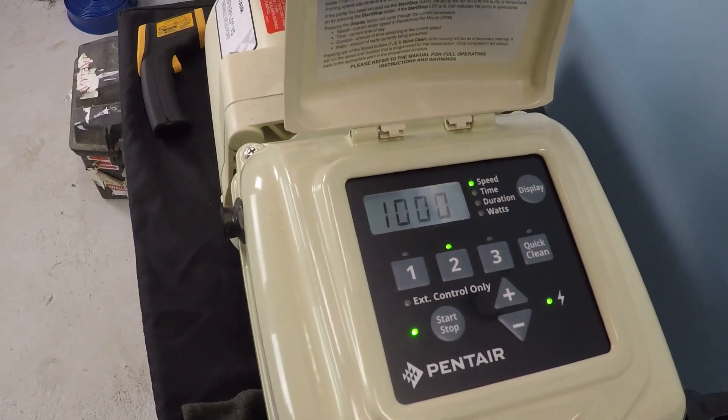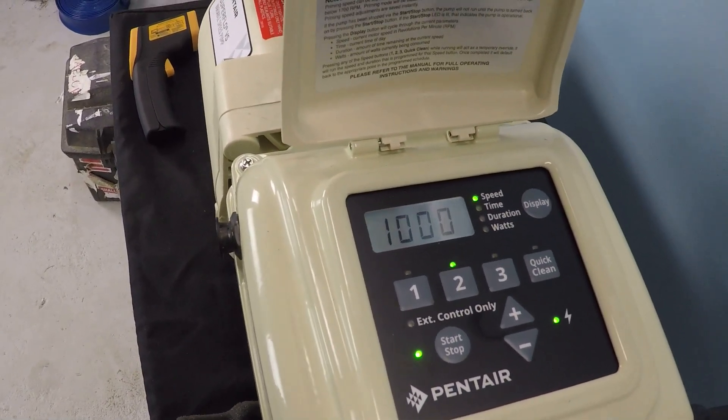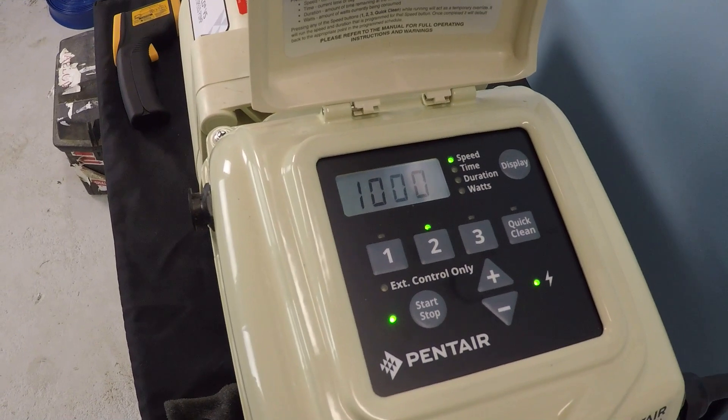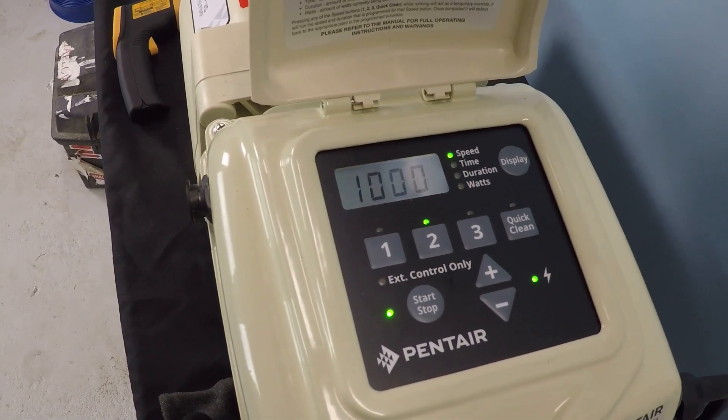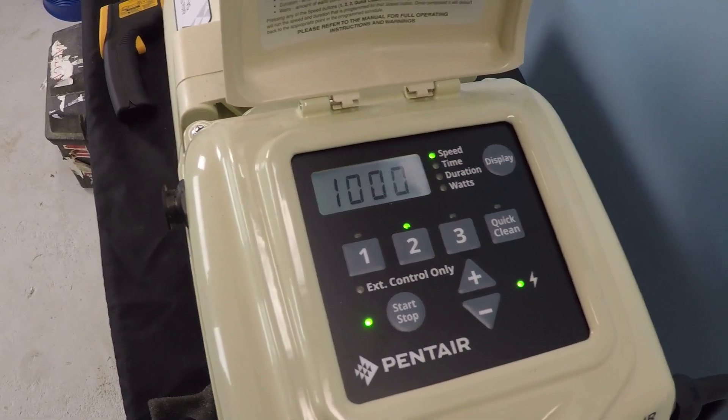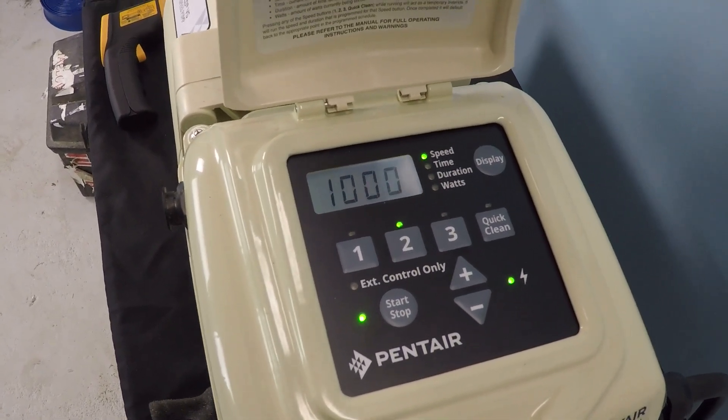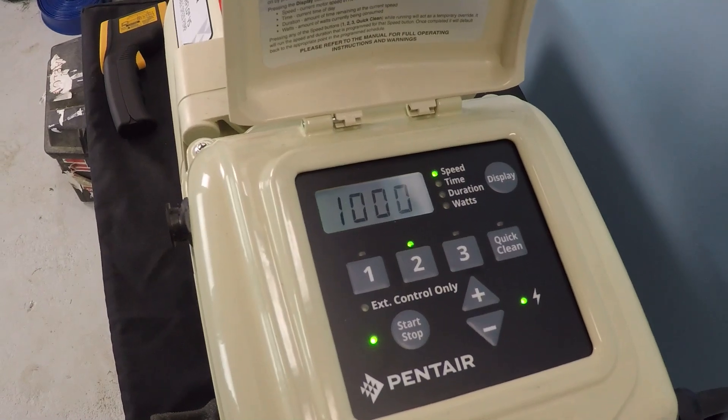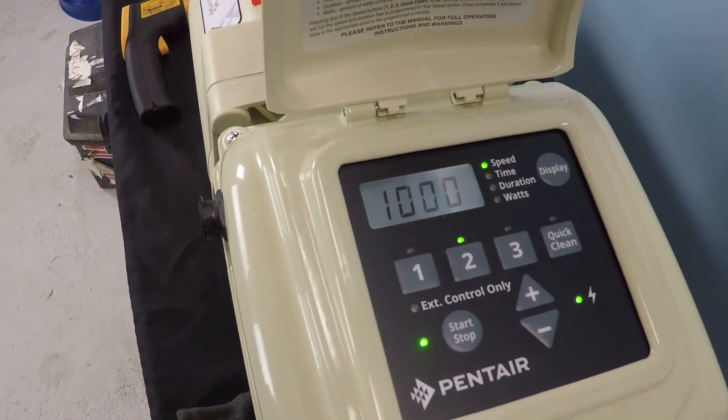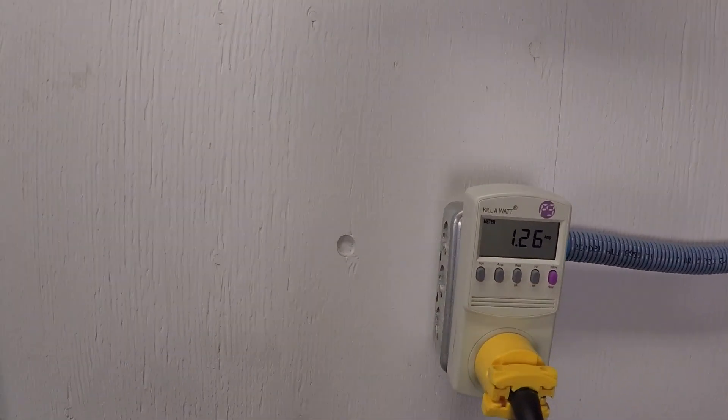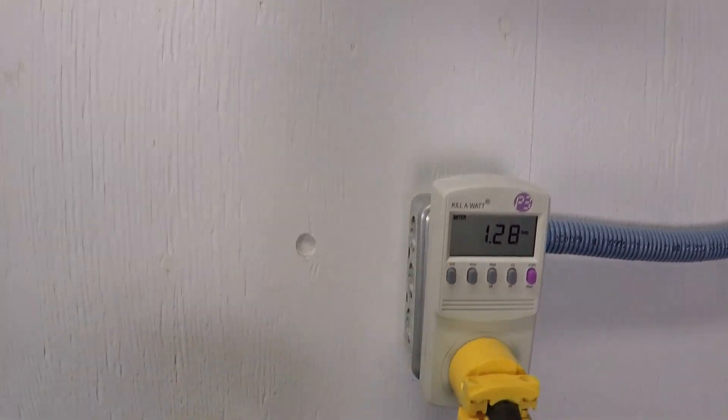Two suction lines and one return line is a really common swimming pool configuration, though possibly more so for older swimming pools, older generation pools. Still, that's something you're going to see quite a bit. Two inch and a half suction lines, one inch and a half return line. And so if that's the type of swimming pool configuration that you have, these numbers should be specifically useful. Now again, this is a 120 volt installation.